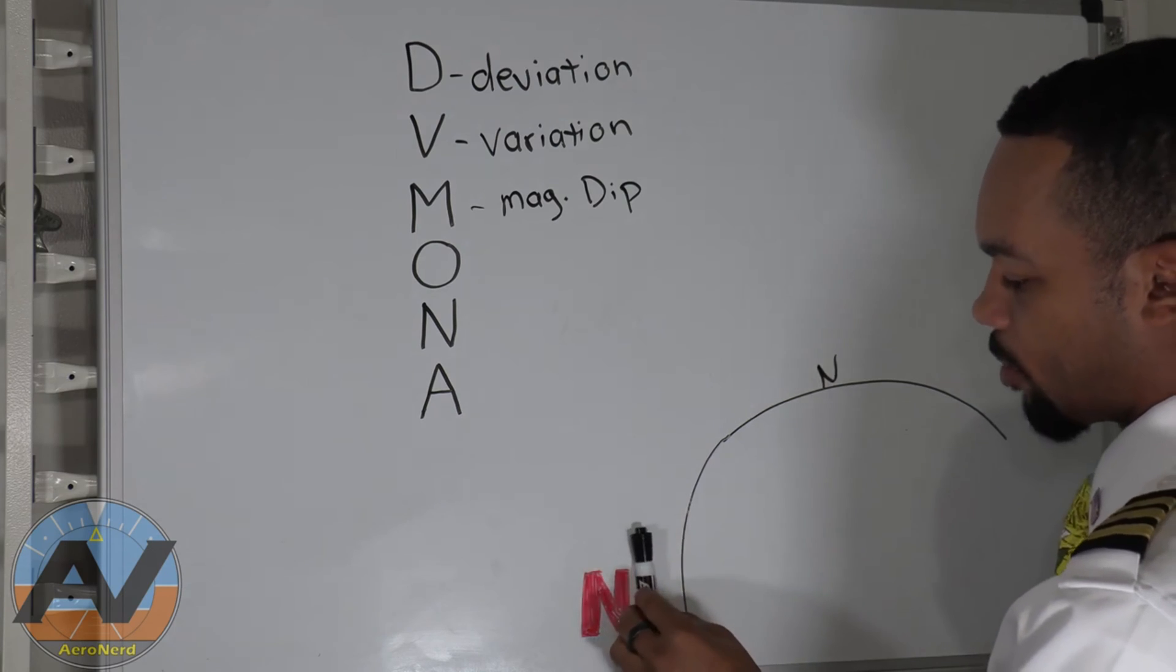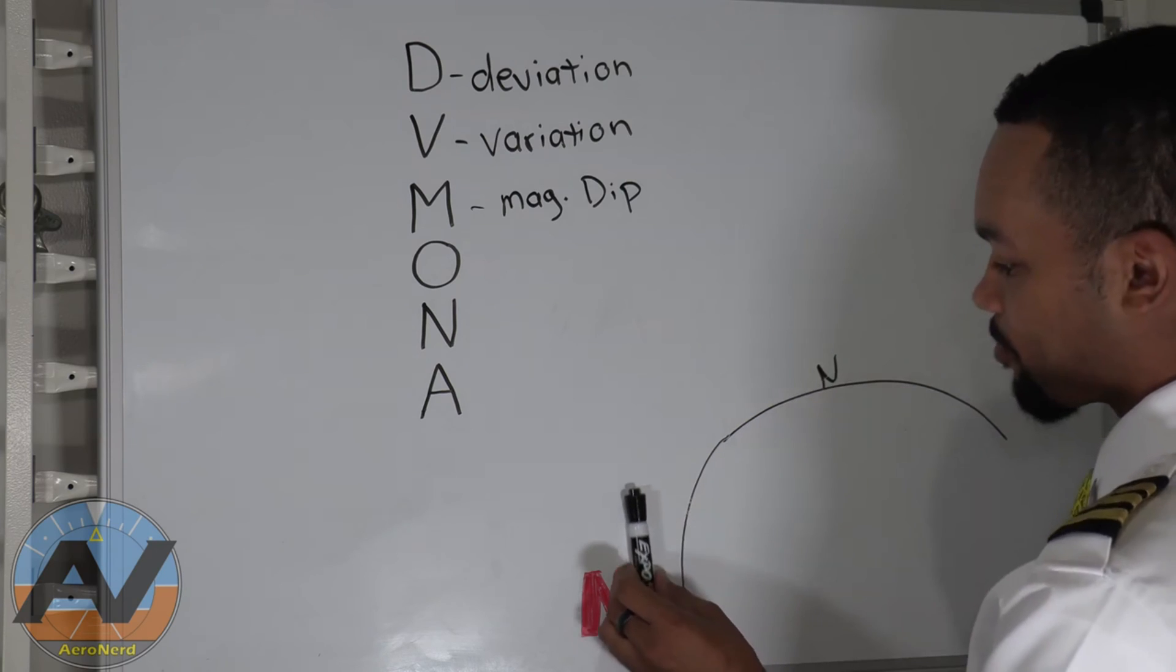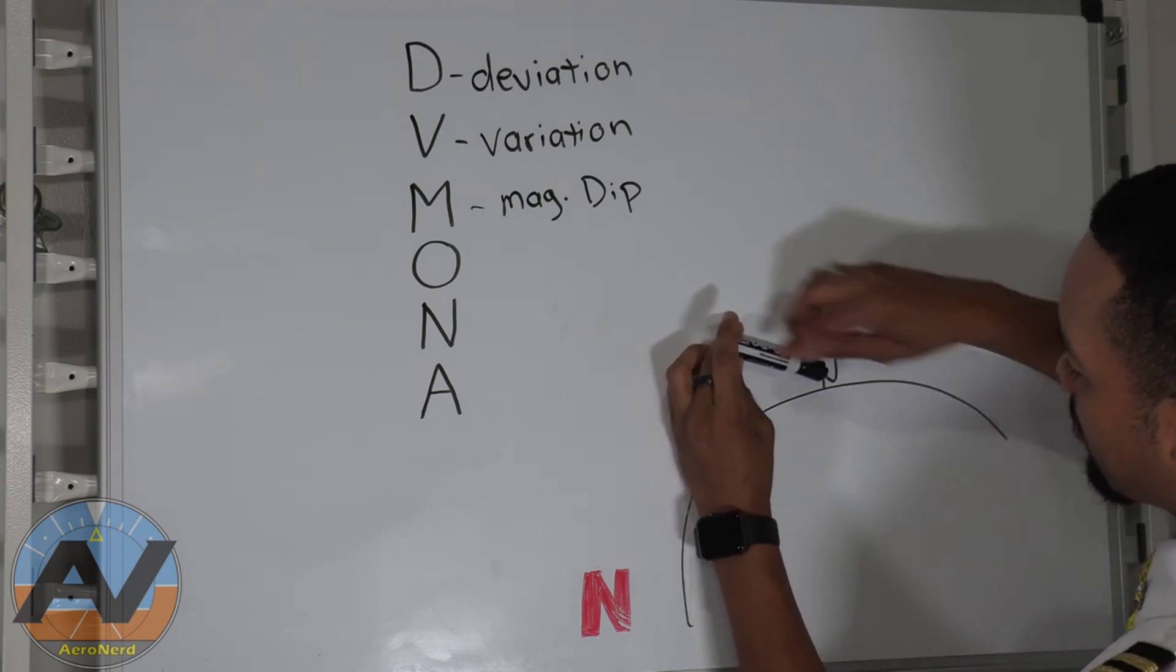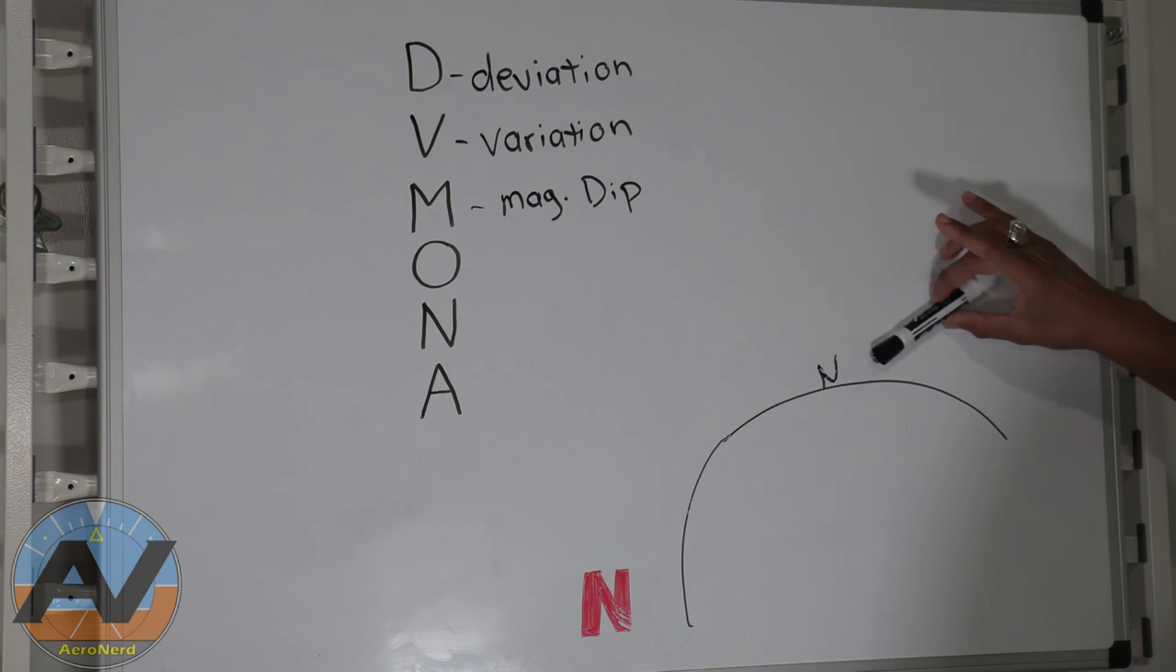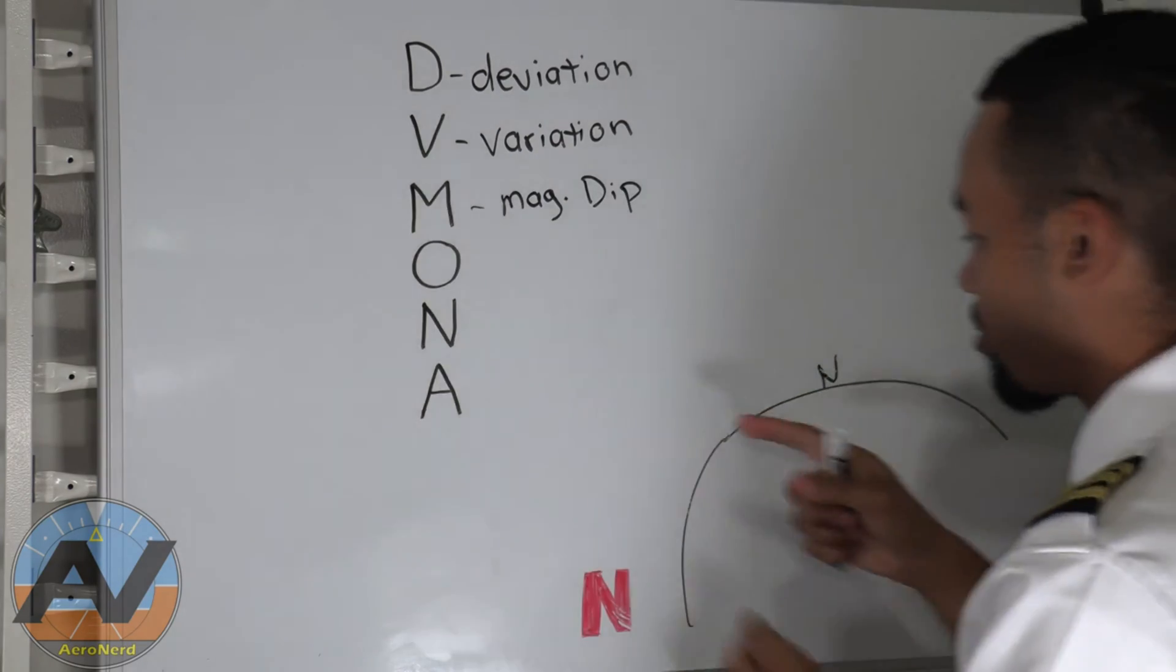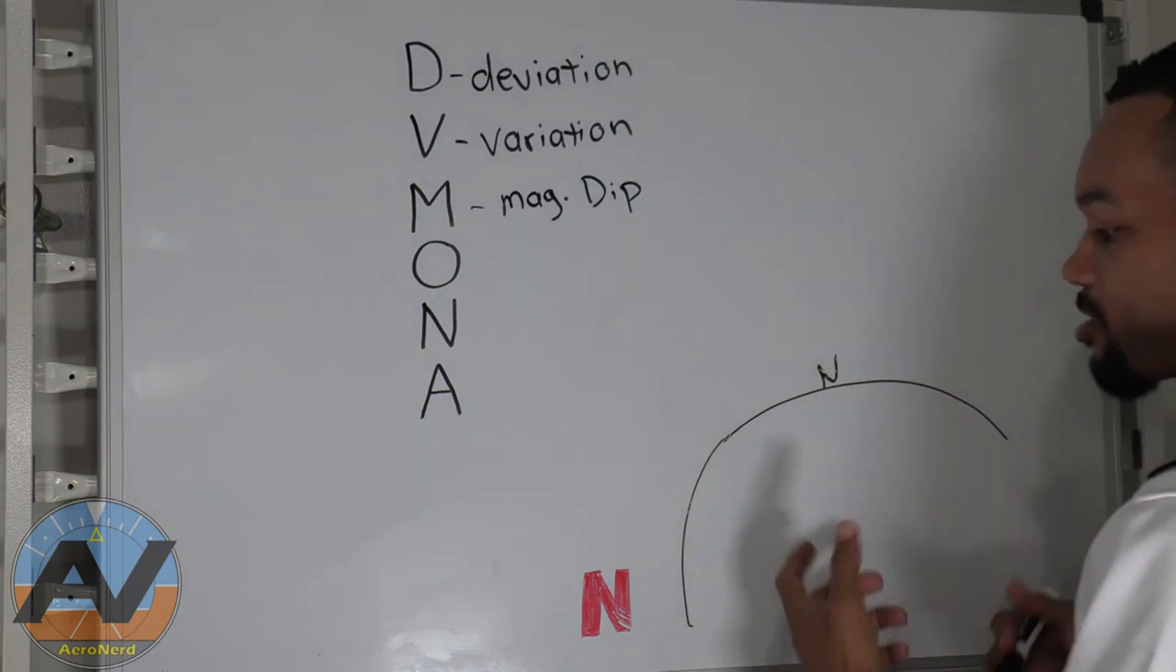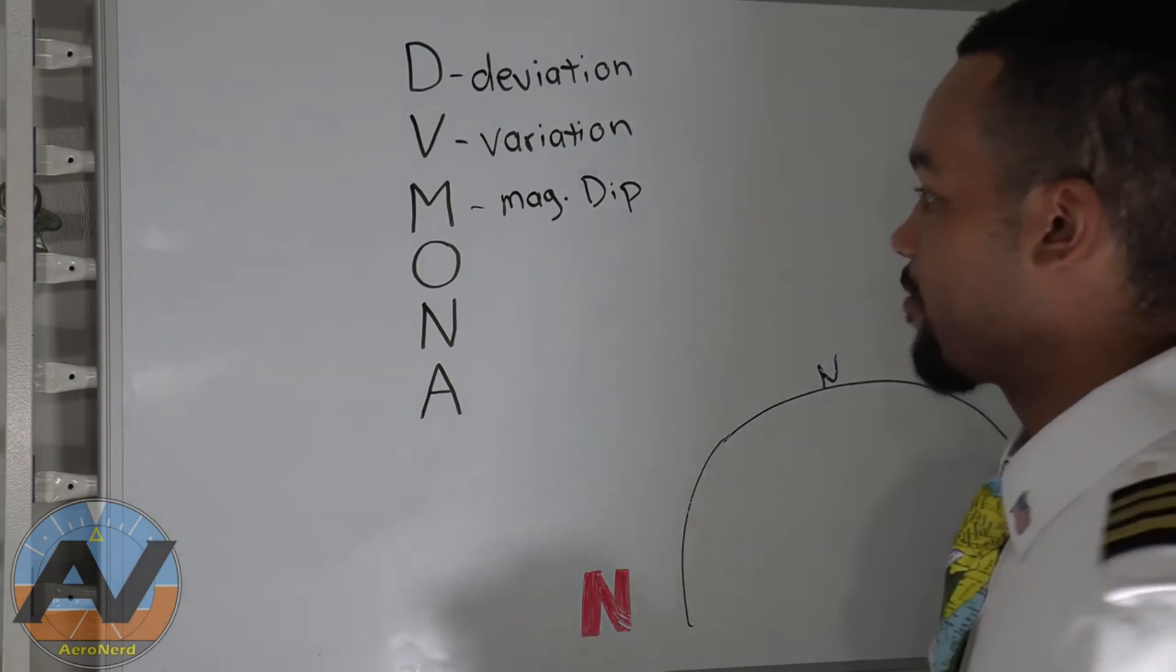But when we're near the equator, it doesn't really have that much effect because it's really far away. However, once we start going closer and closer and closer, you see what's happening. It really wants to be attracted to that north. The further north you are, the more aggressive that magnetic dip error is going to be. When you're in the equator, it doesn't really have that much effect.